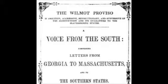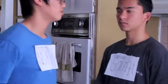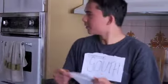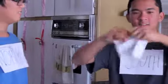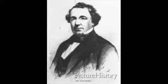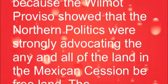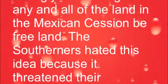This proviso, also known as the Wilmot Proviso, would have made it so that no territory acquired from the Mexican Cession would be a slave state. The South called for rejection almost immediately. The proviso was a grave threat to their way of doing things, namely slavery. Of the compromises made leading up to the Civil War, the Wilmot Proviso was one of the most northern biased. This relates to the thesis because the Wilmot Proviso showed that northern politicians were strongly advocating that any and all of the Mexican Cession be free land.